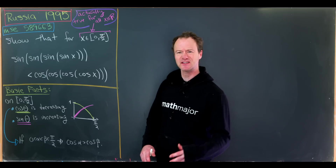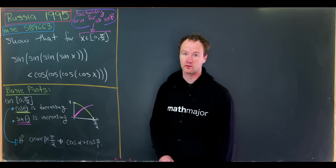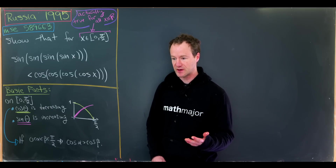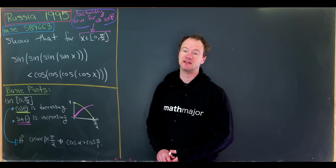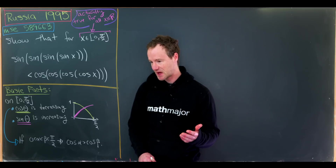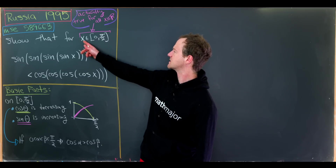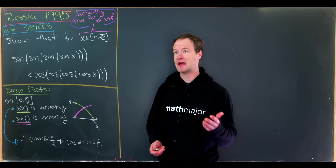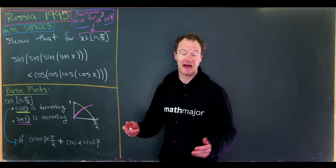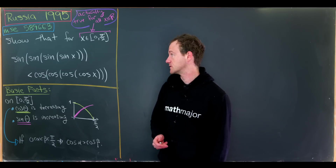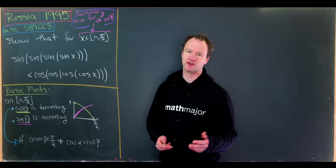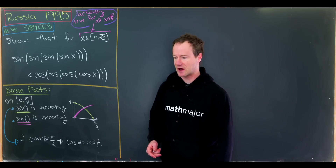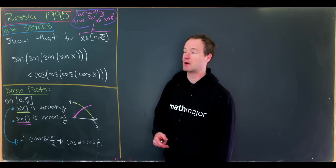This inequality is in fact true for all real numbers x. To prove it, you only need to show it's true for x between 0 and 2π given the periodicity of sine and cosine. For illustrative purposes we'll focus on x between 0 and π/2. When x is between π and 2π, this is quite easy given the sign of sine and cosine, and for x between π/2 and π you can look at the linked post or work it out yourself.